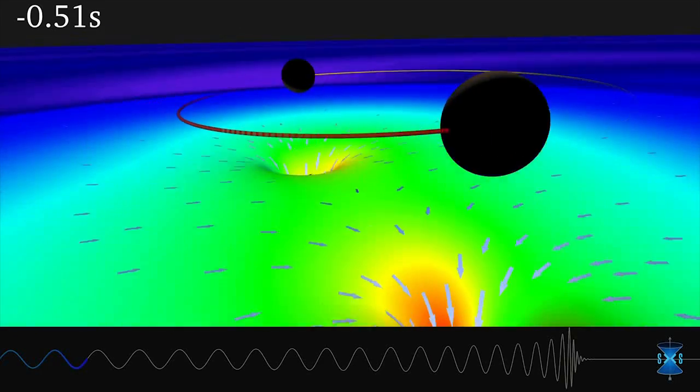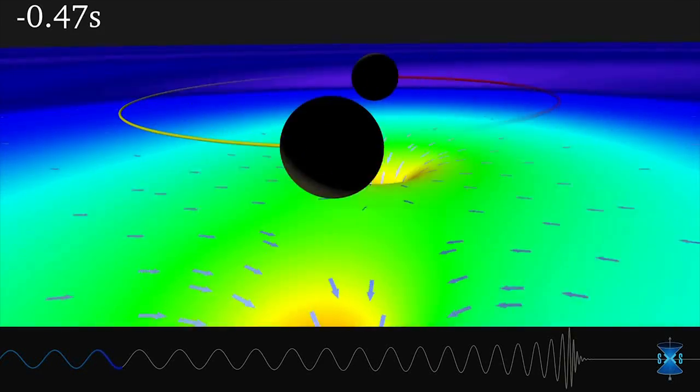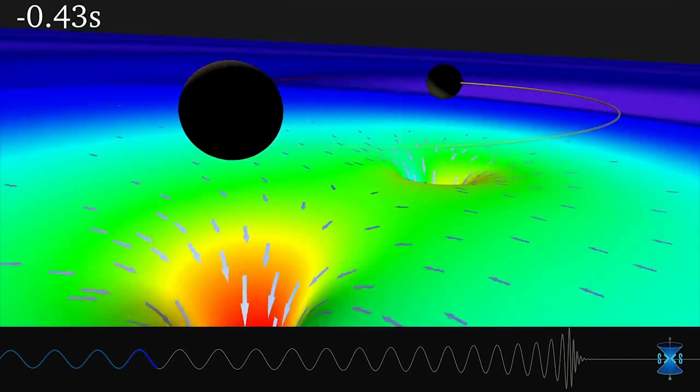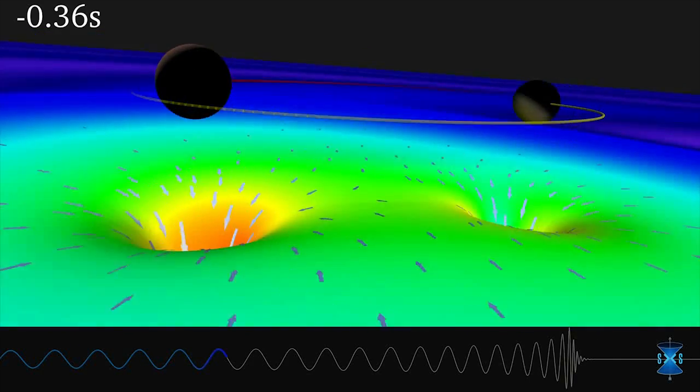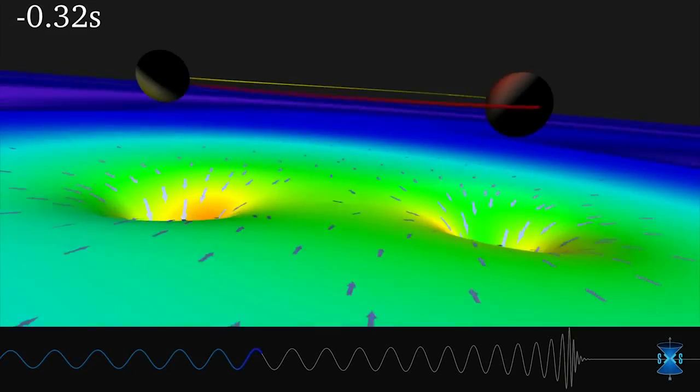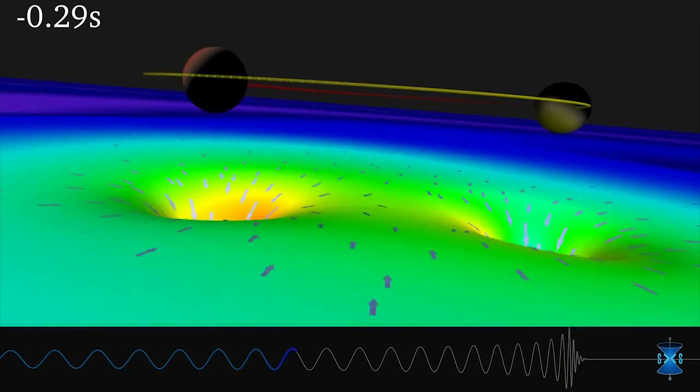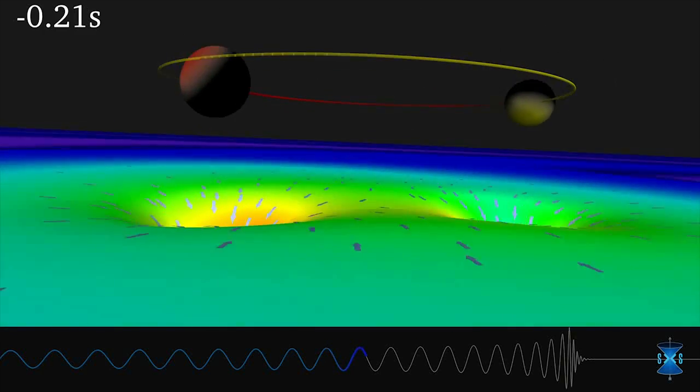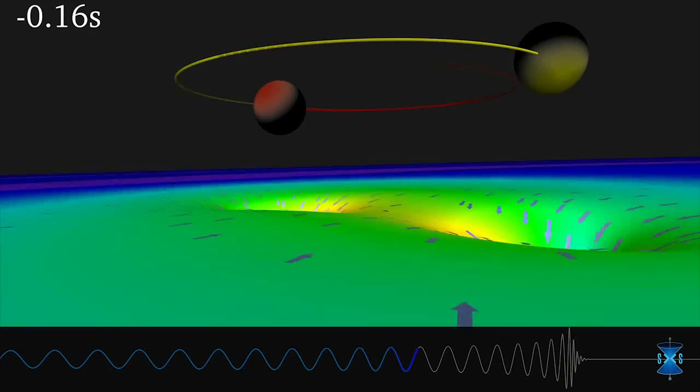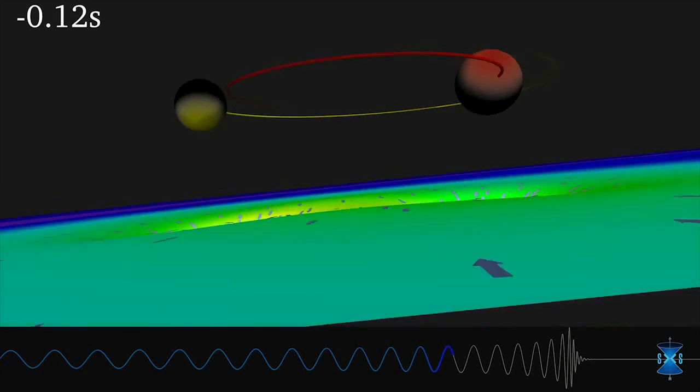So, on September 14, 2015, that date will be marked in our minds, what we received is a signal that behaved in this very characteristic wave, an oscillation, an oscillation of those end arms of our detectors, that increased in amplitude, the wave became stronger and stronger, and also the frequency became higher and higher until the signal died down.